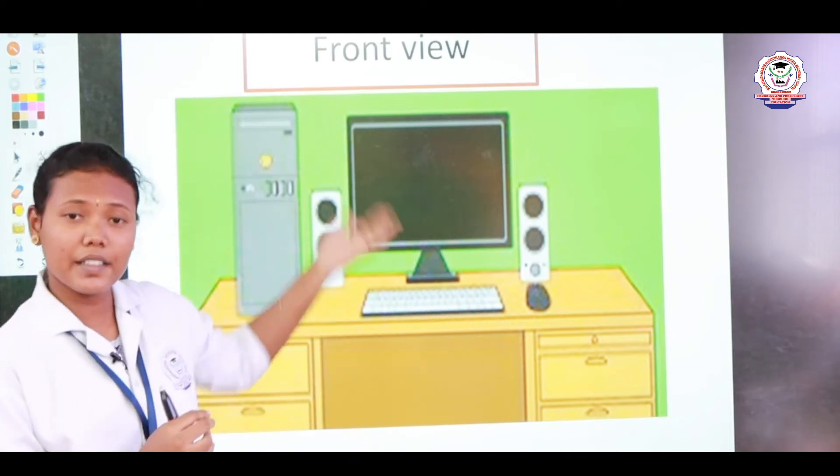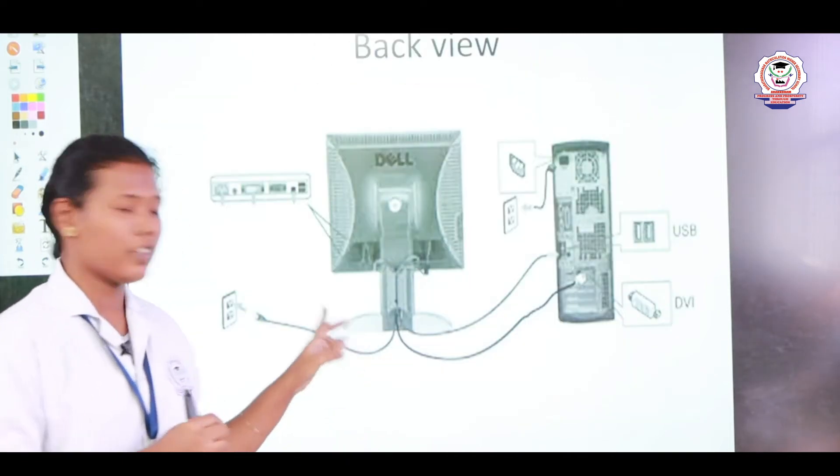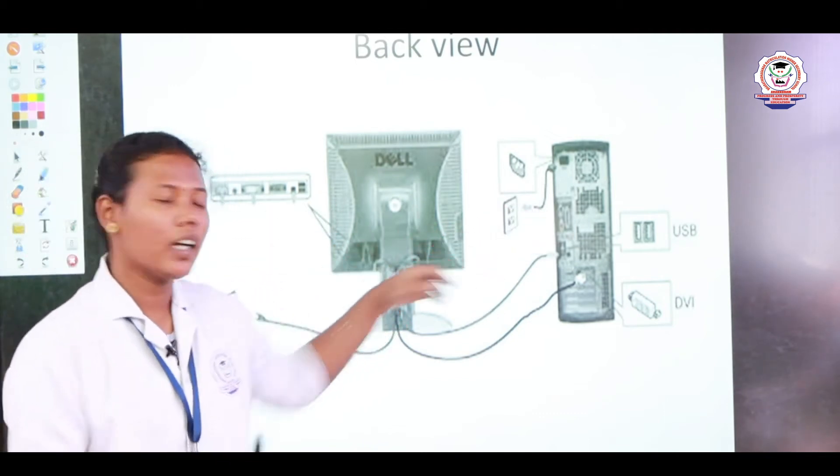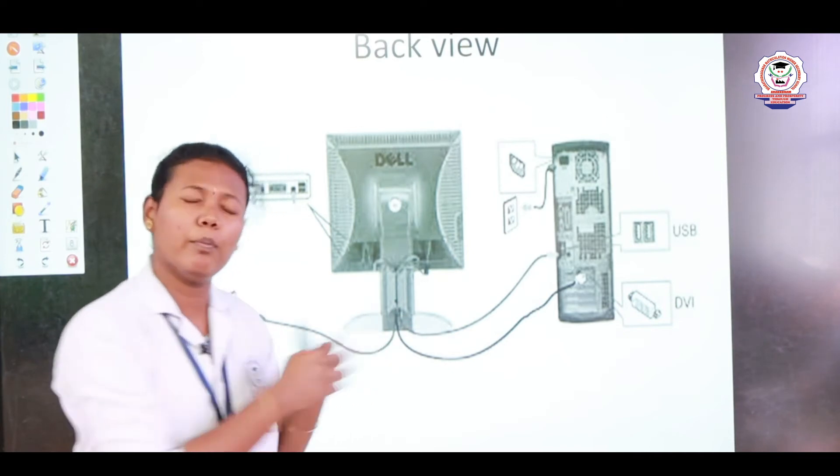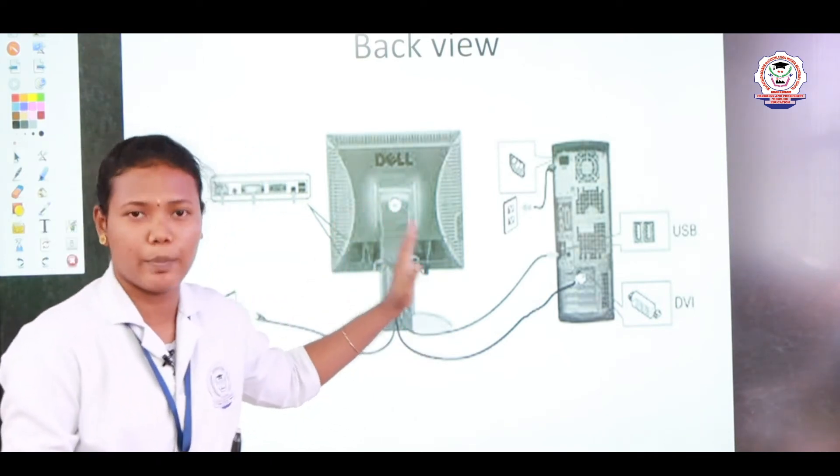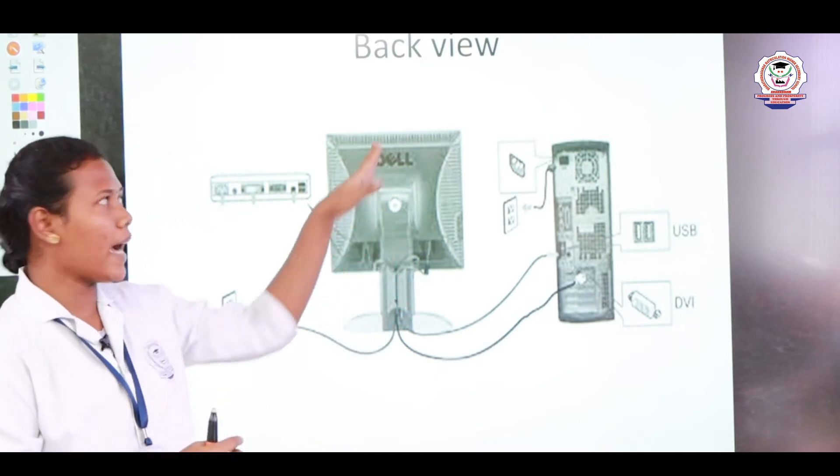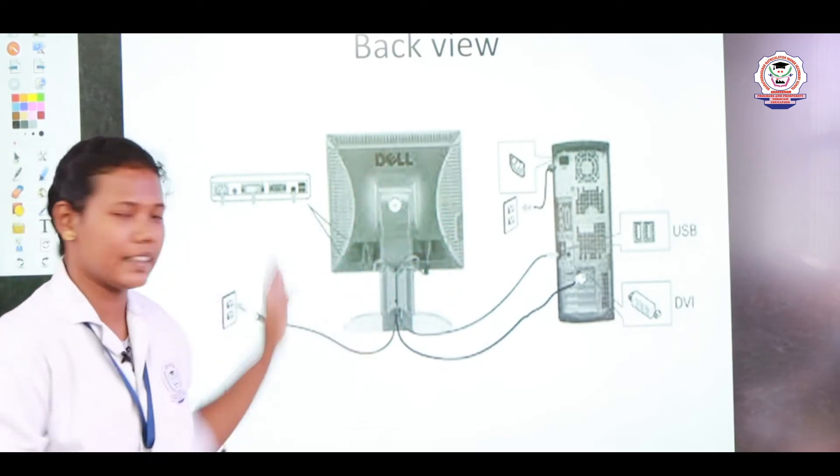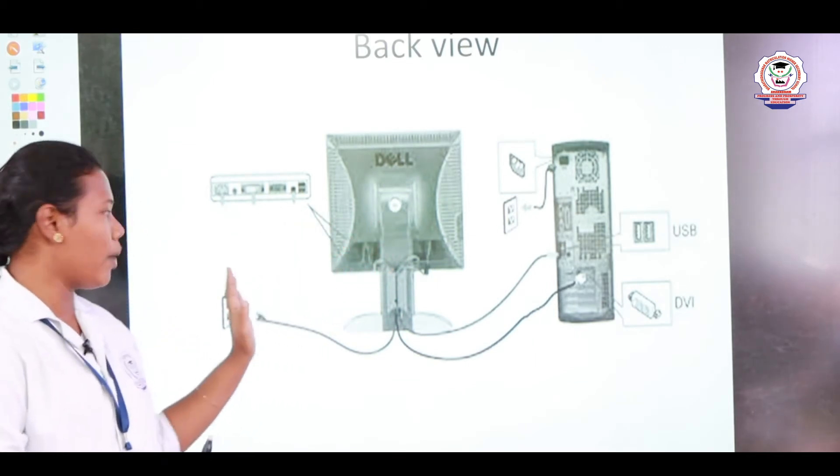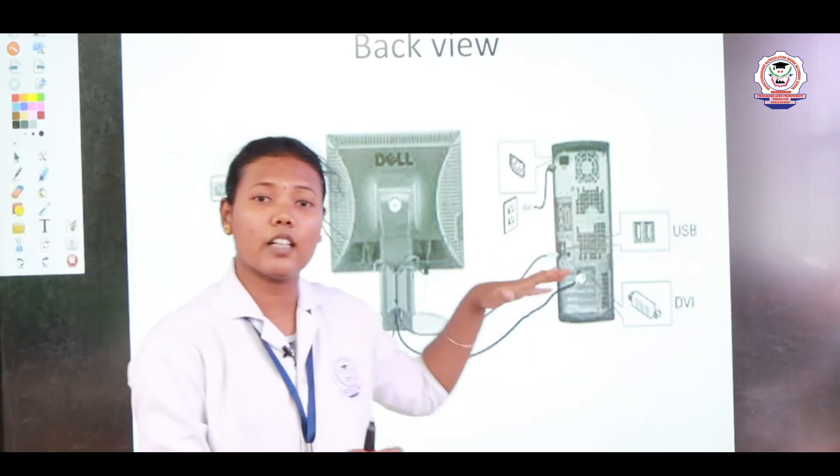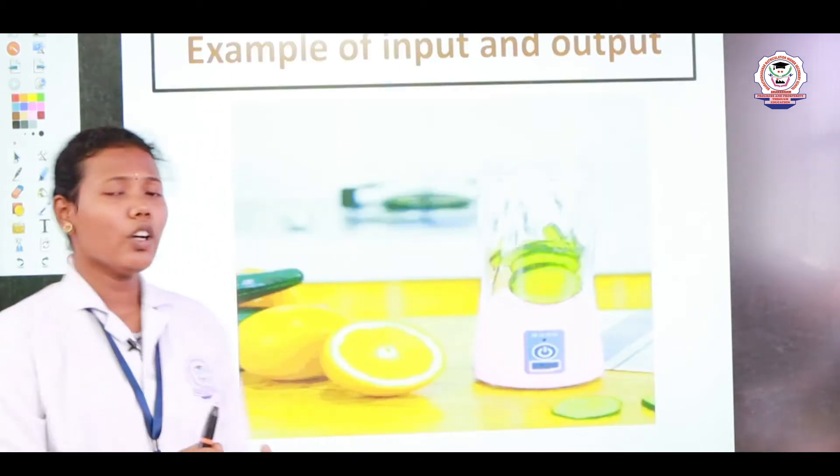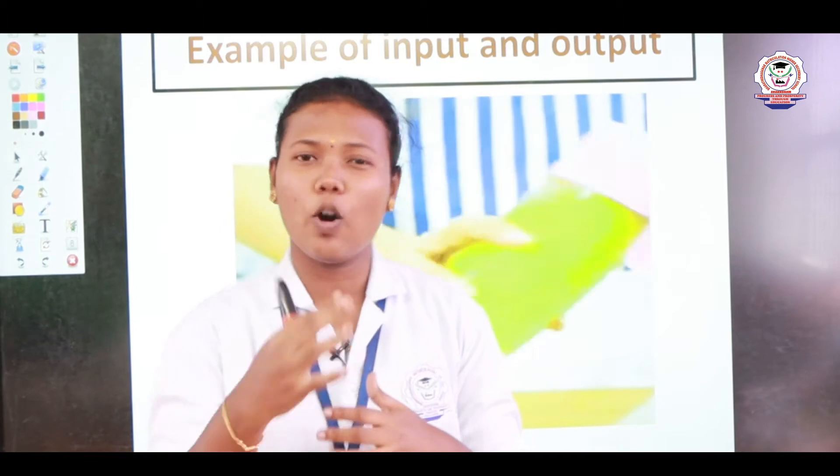In the back side of the computer, the back view, each and every part is connected by a wire. Multiple wires are used to connect these computer parts. The back view will resemble like this - the CPU, monitor, and the mouse. These are connected by wires. So do you know what is input and output?